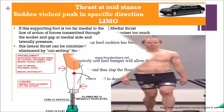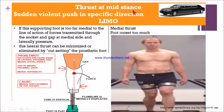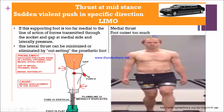Now let's see thrust at mid stance in transtibial gait deviation. Thrust is a sudden violent push in a specific direction. Remember the mnemonic 'limousine car.' For medial thrust, the foot is outset too much. There will be excessive pressure and pain in the lateral proximal area and the distal medial area.